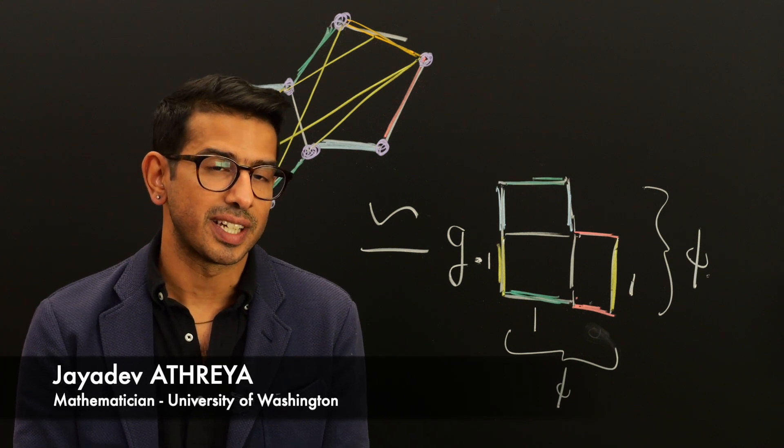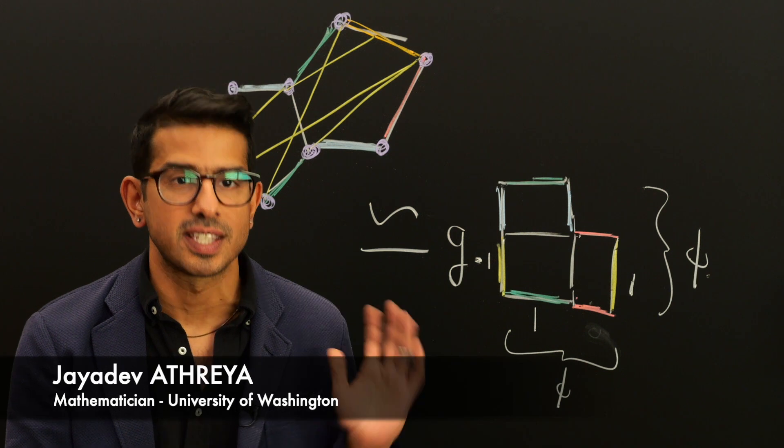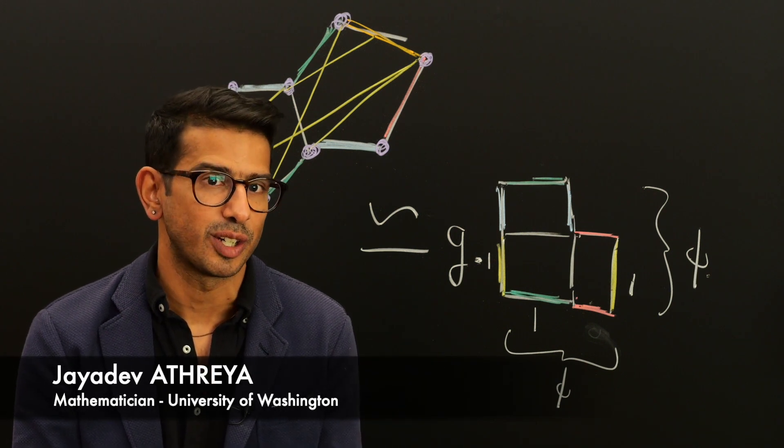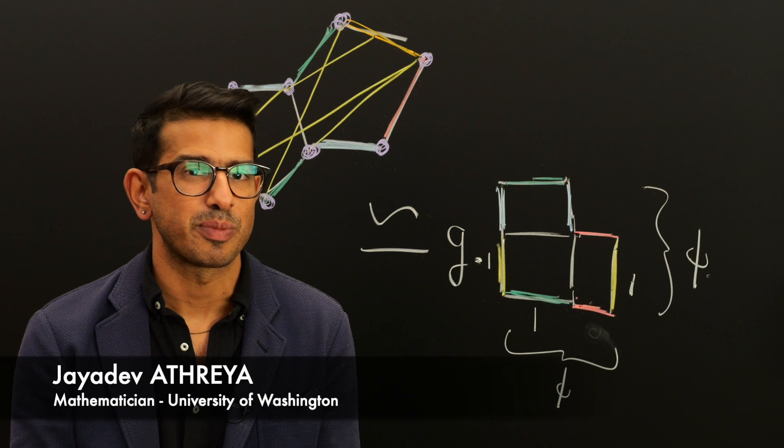And what I study is generalizations of shapes like this. You can see one on the board behind me. This is something called the double Pentagon, which is also related to something called a golden L.